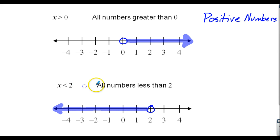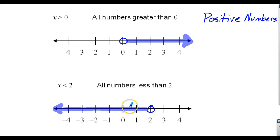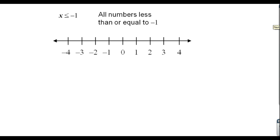Let's try: x is less than or equal to negative one — all numbers that are less than or equal to negative one. Now I have the or equal to sign, which means instead of an open circle, I'm going to have a closed circle, because negative one is now part of the solution. Is negative one lower than negative one? No. But it could be equal to — and that's what it's saying: what number is lower than or equal to negative one?